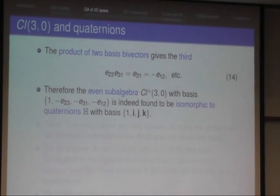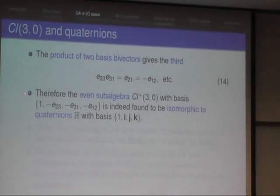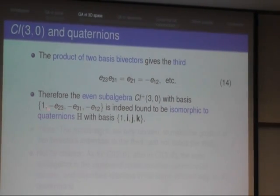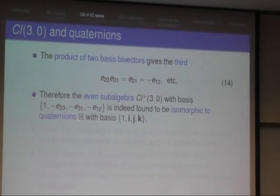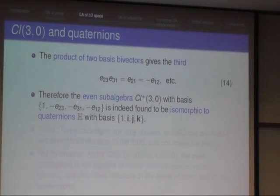Then we get a sub-algebra, and this can be written, for example, as a basis, this one minus e23 minus e31 minus e12. So take the bi-vectors and the scalar one, and this is then one-to-one isomorphic, and all the products that you can compute isomorphic to quaternions with this familiar basis. So if you're used to work with quaternions, you can continue to use everything that you know about quaternions.